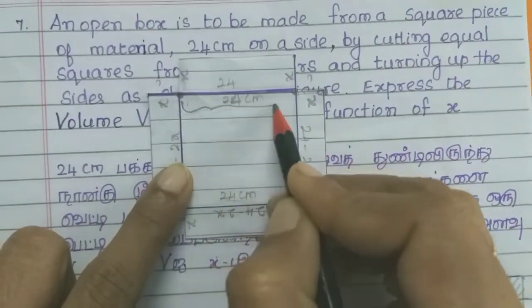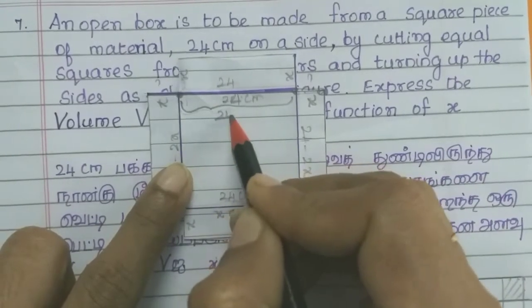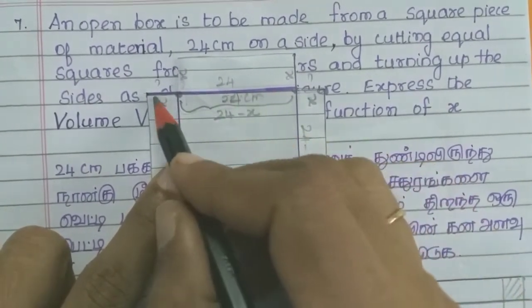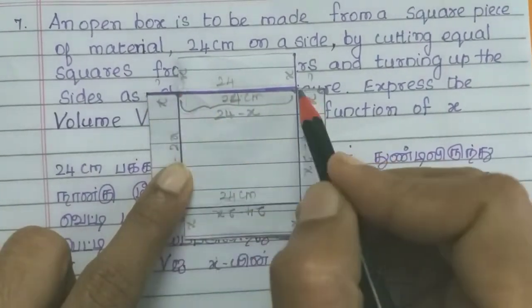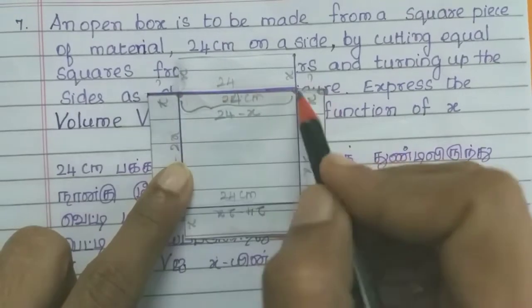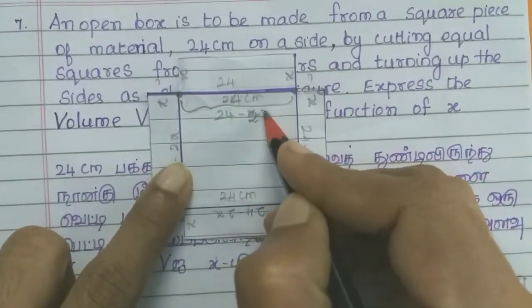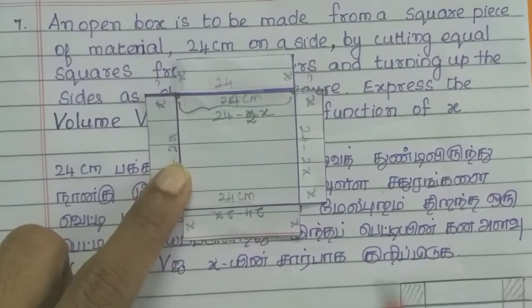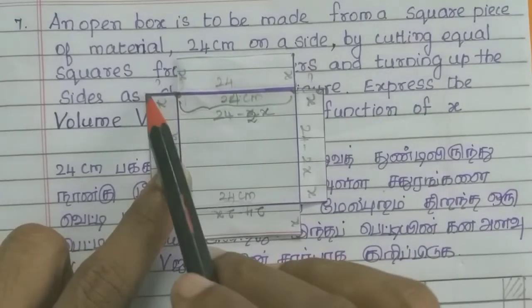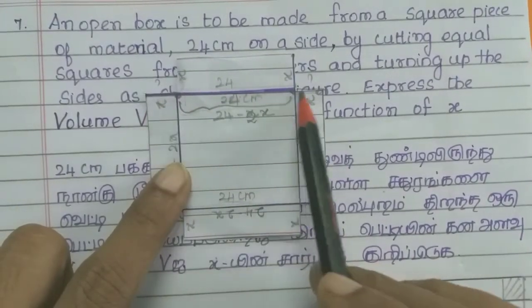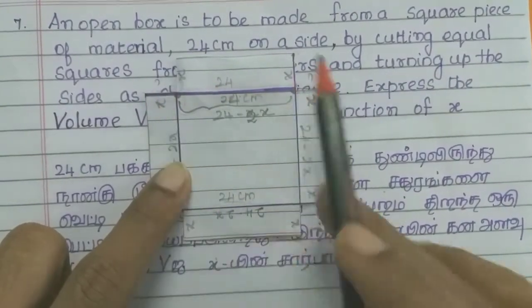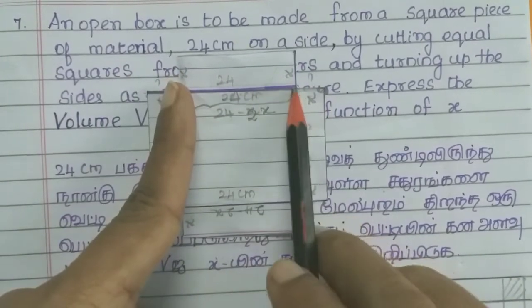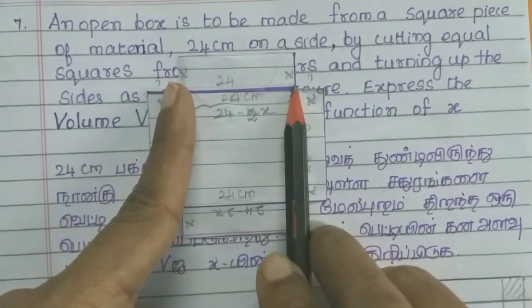What is the remaining length? Here is x, so x plus x is 2x. Therefore the remaining side length is 24 minus 2x.